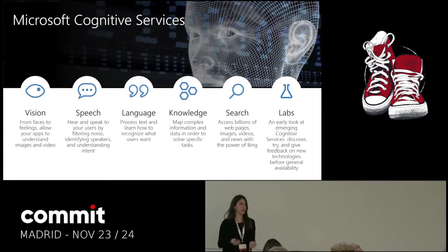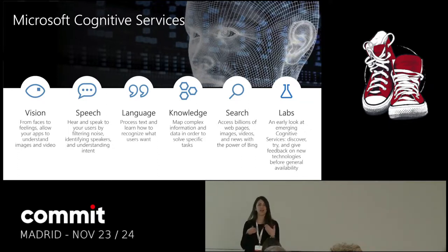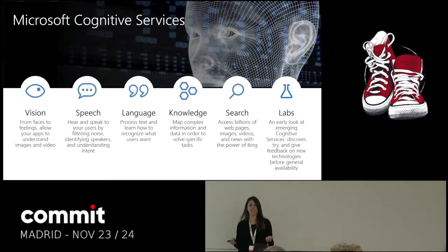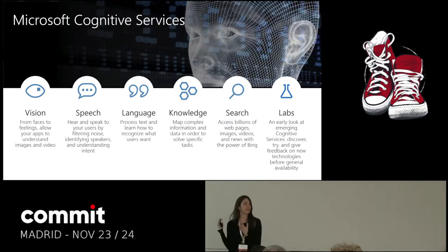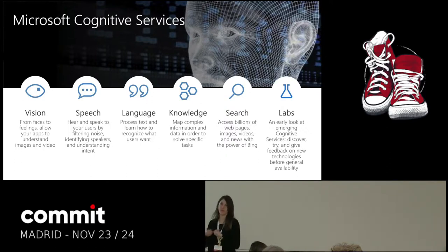Why would you want to use these? You might have an app which shows or manages images, and you want to understand what's in those images — what objects there are, what colors, or what the image means. That's when you can use these APIs, the cognitive services. It will give you that information which a human might see when they see an image, but an app normally doesn't by default.